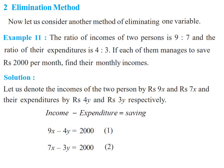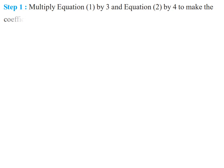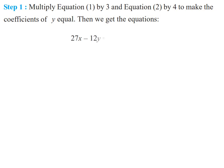Now we have to solve these equations by elimination method. In elimination method, we eliminate one variable from the equations. Step 1: multiply equation 1 by 3 and equation 2 by 4 to make the coefficient of y numerically equal. The first equation becomes 27x minus 12y equals 6000 (equation 3), and the fourth equation becomes 28x minus 12y equals 8000 (equation 4).